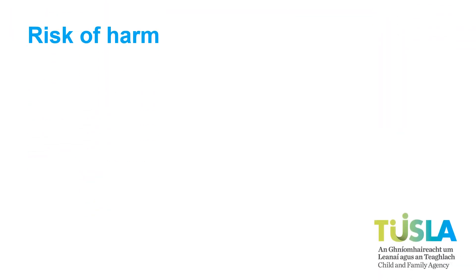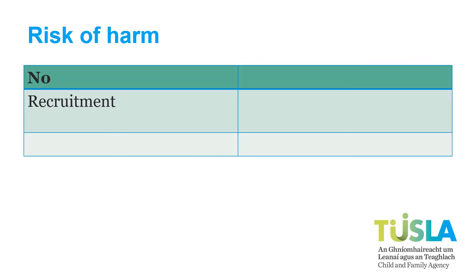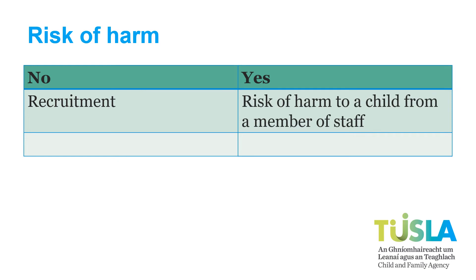When writing your risk assessment, it is important to be clear about what the risk of harm to a child while they are with you is. For example, listing 'recruitment' would not be a risk of harm. Instead, 'risk of harm to a child by a member of staff' would clearly show the risks.